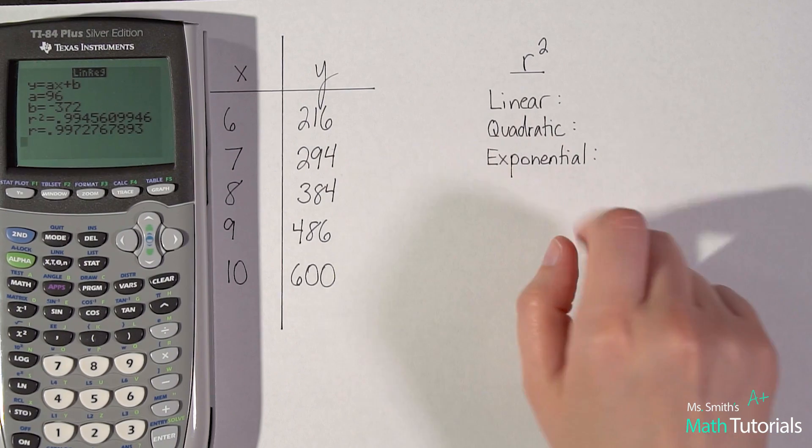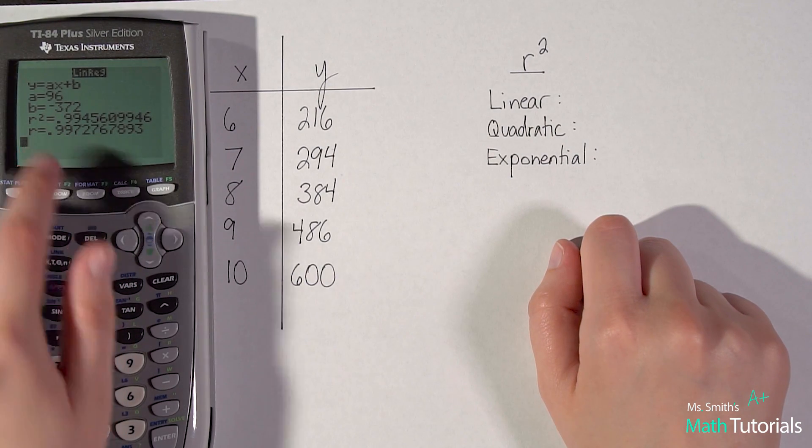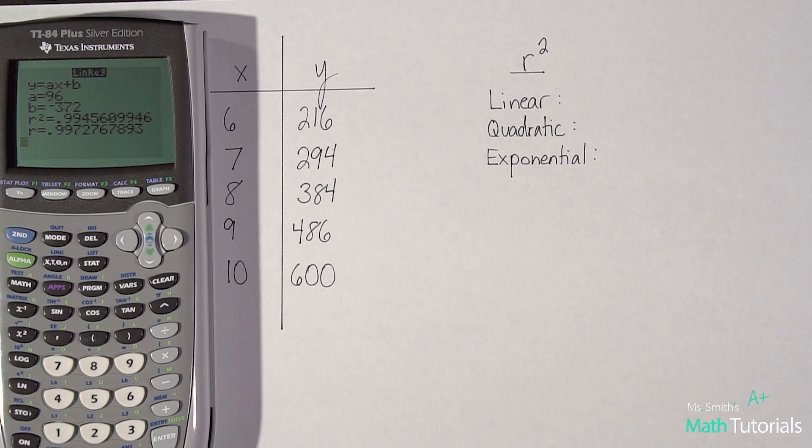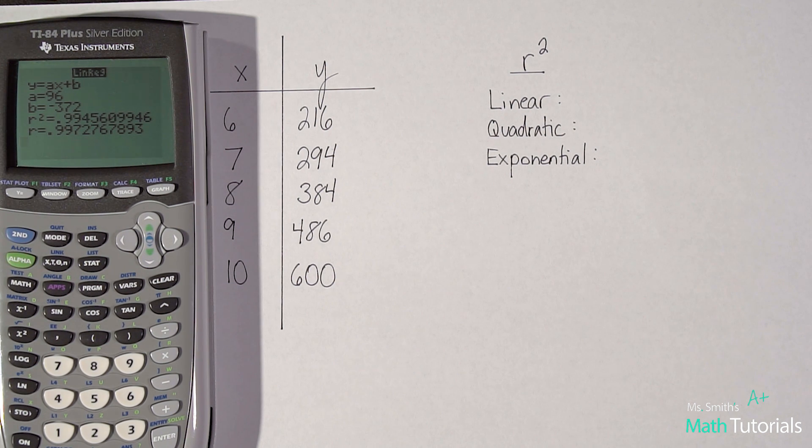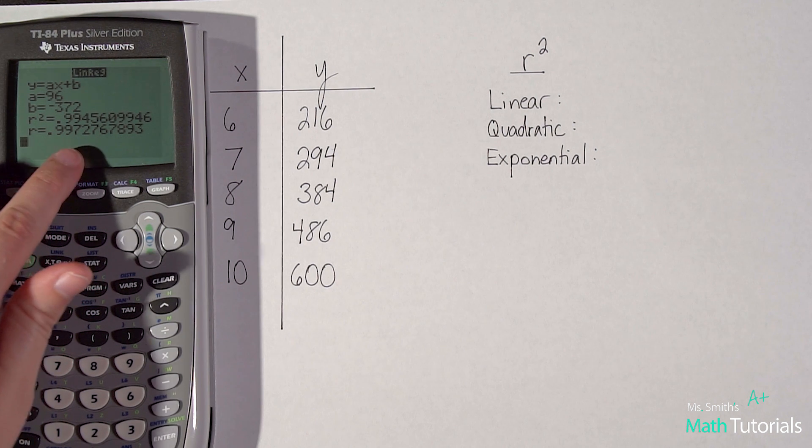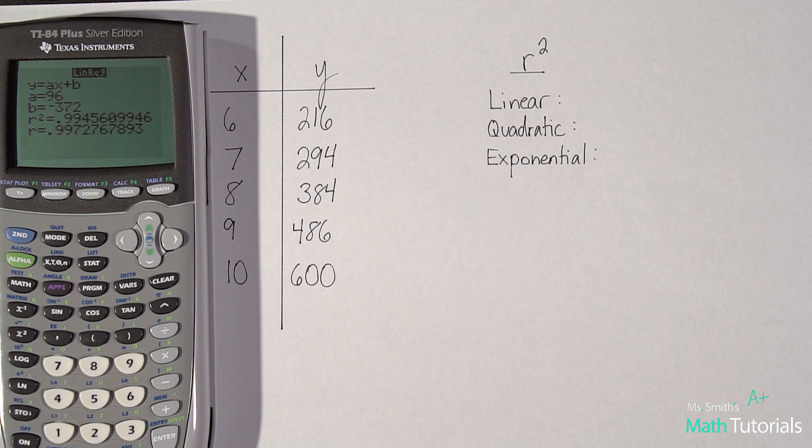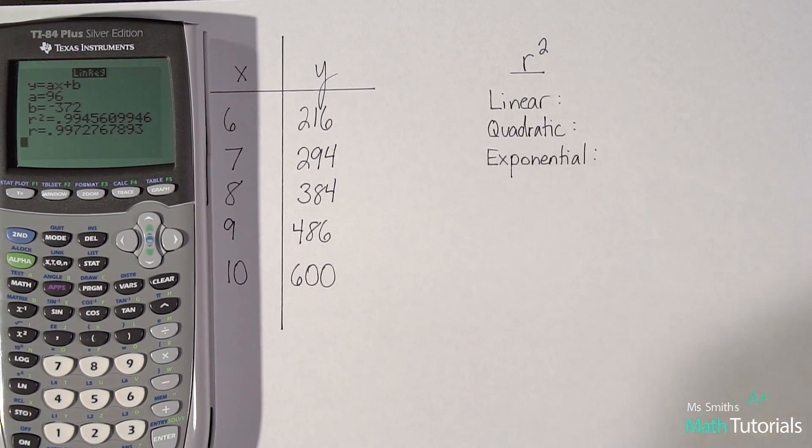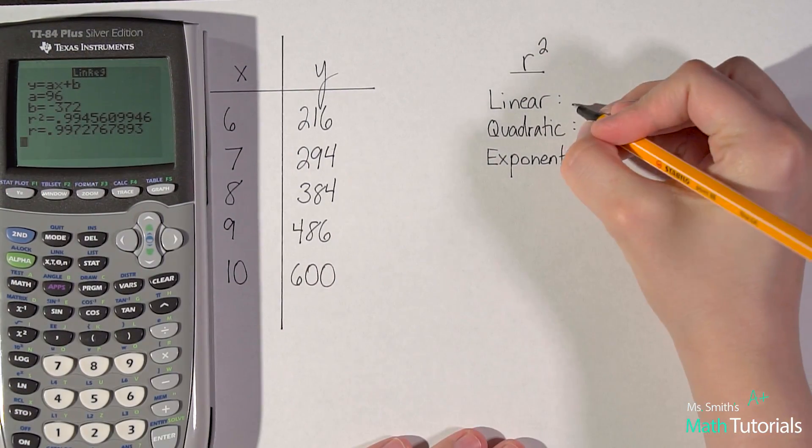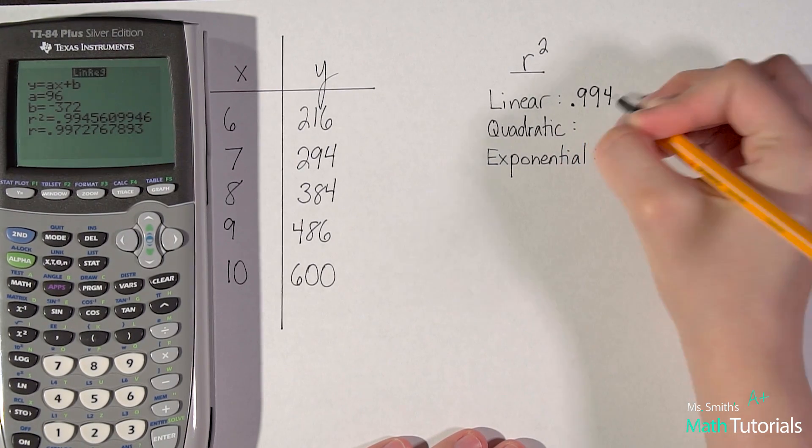We want, for what we're doing right here, we want the R squared data. If it wants R data, it will specifically tell you it wants R data. A big question students ask is, what's the difference between R squared data and R data? R data is what we would look for when we're talking about line of best fit. It talks about how strong is our correlation. The closer to one the R value is, the more strong of a correlation it is for our line of best fit. There will be times that we'll ask you about that. The R squared data, that's when we're talking about when we want to compare linear to quadratic to exponential. We use the R squared when we're doing this process.